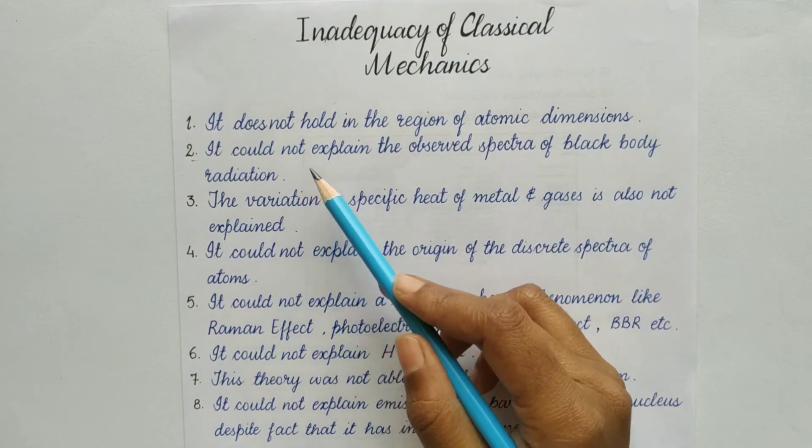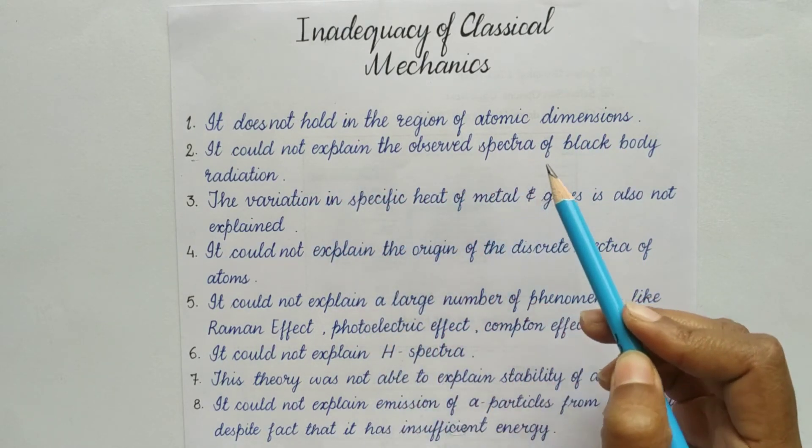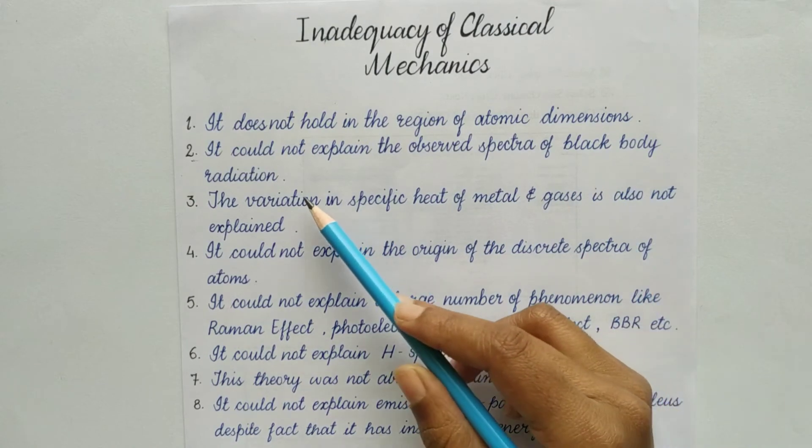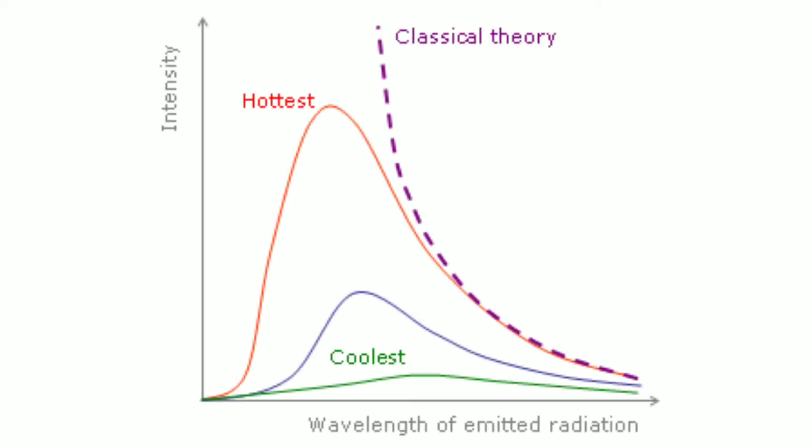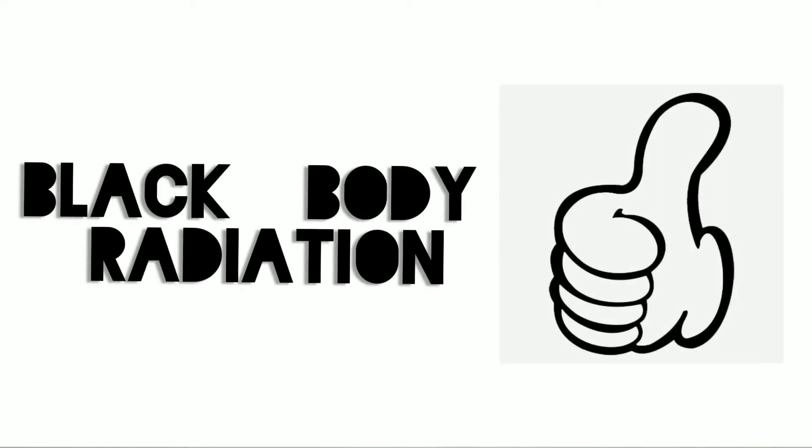Number two, it could not explain the observed spectra of black body radiation. The spectra or curve that we obtained in black body radiation was also not explained by classical mechanics. We will study the black body radiation deeply in further videos.